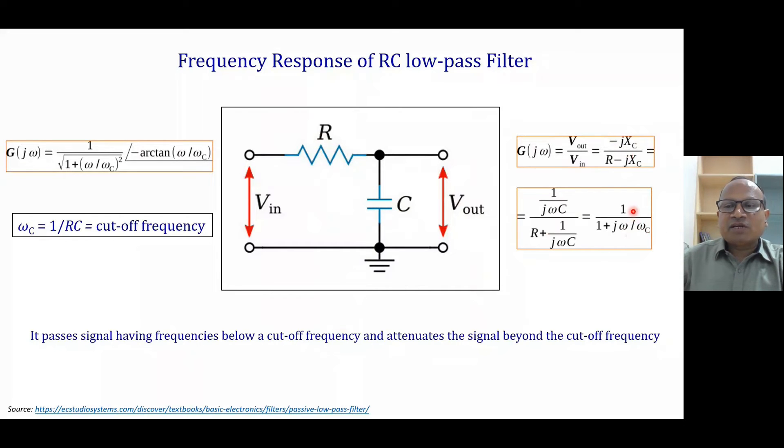If we want to write this expression in terms of frequency, ordinary frequency, we can write 1 divided by 1 plus jf divided by fc, where omega C here is cutoff frequency, that is 1 divided by RC. Omega C is angular cutoff frequency. When we want to write in terms of f, we can write fc equals 1 divided by 2 pi RC.